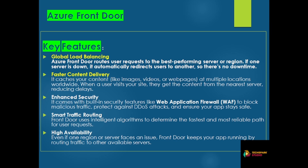Let's say you have one app and that app needs to be published globally — global users can access that URL or app. Azure Front Door will help you access that web app. Think of it like a smart traffic manager for your web application. Instead of all your users connecting to a single server from one location, Azure Front Door makes sure they are connected to the nearest and fastest server, no matter where they are.